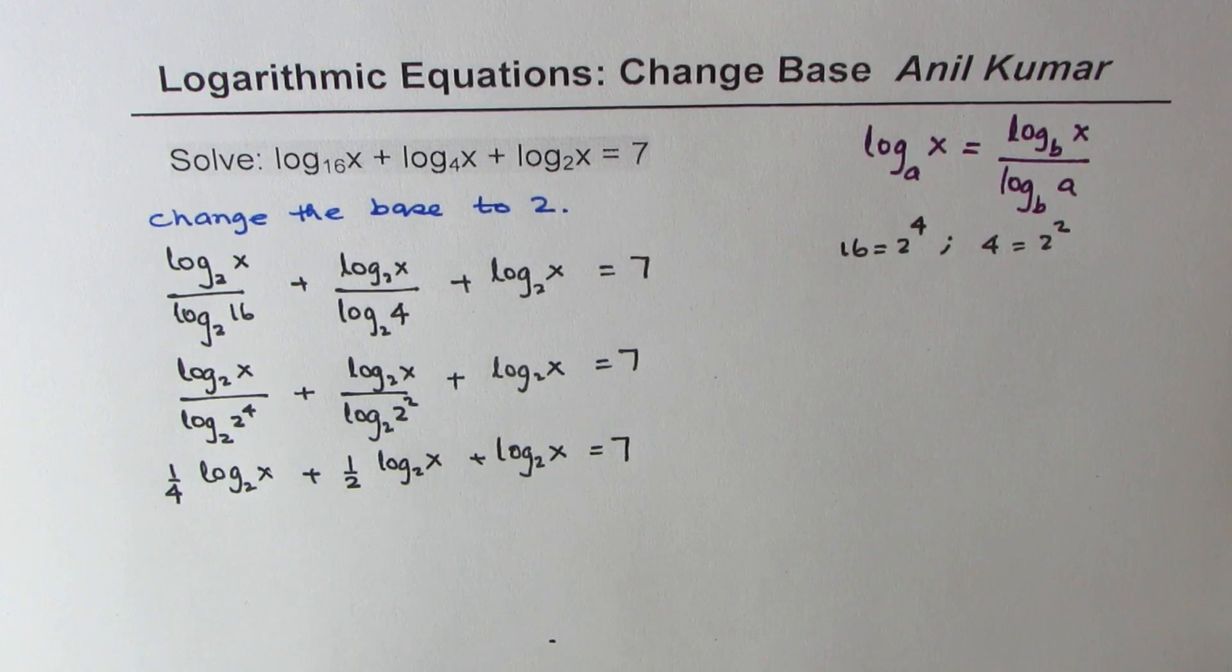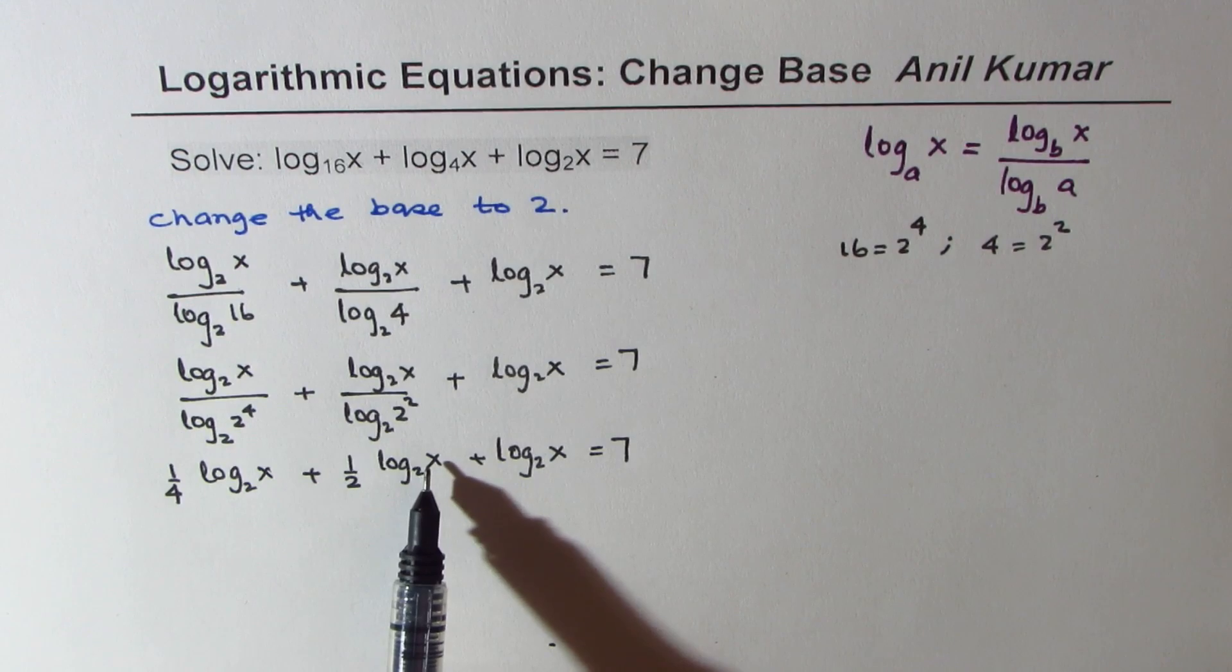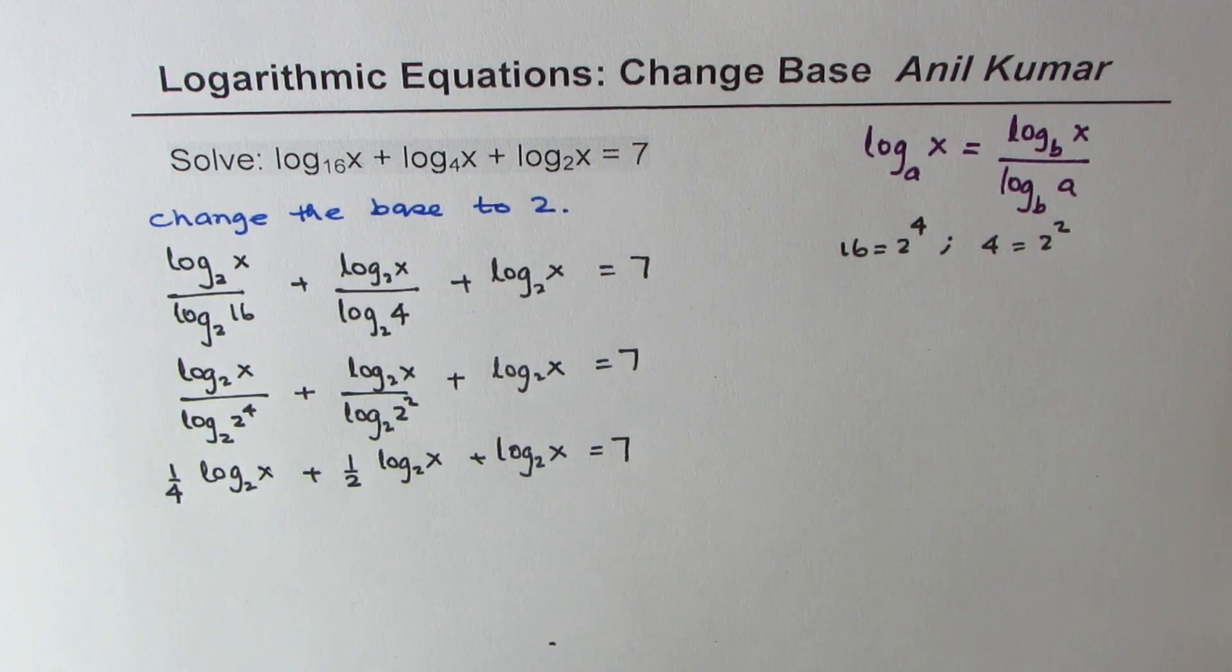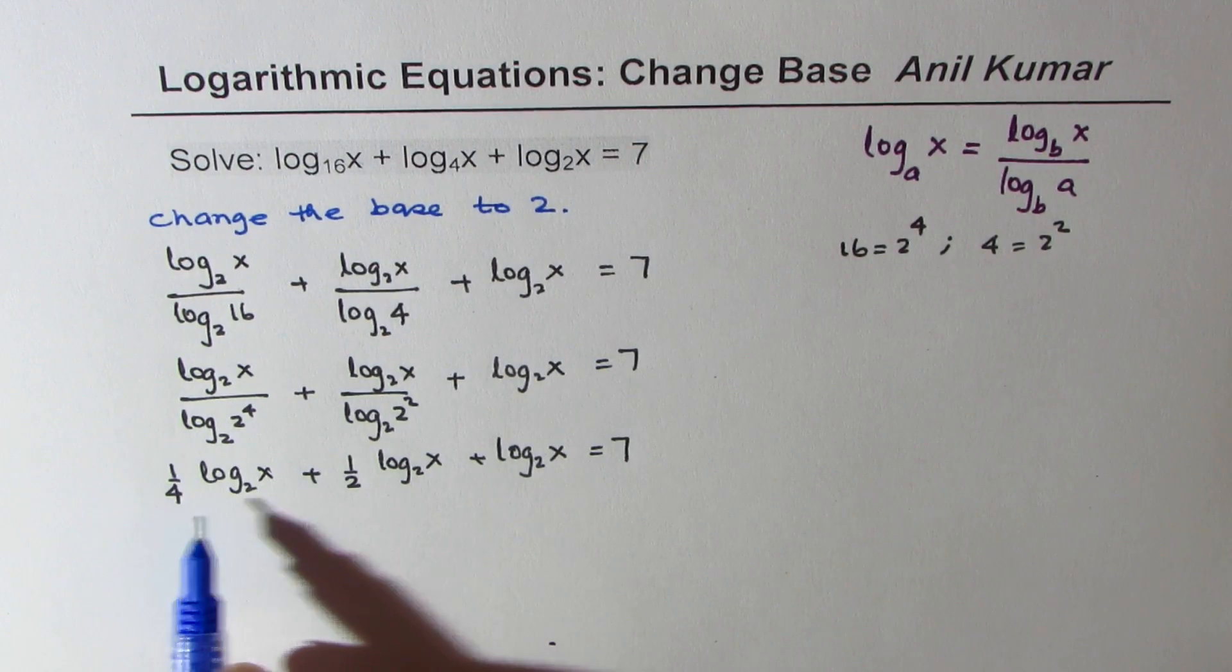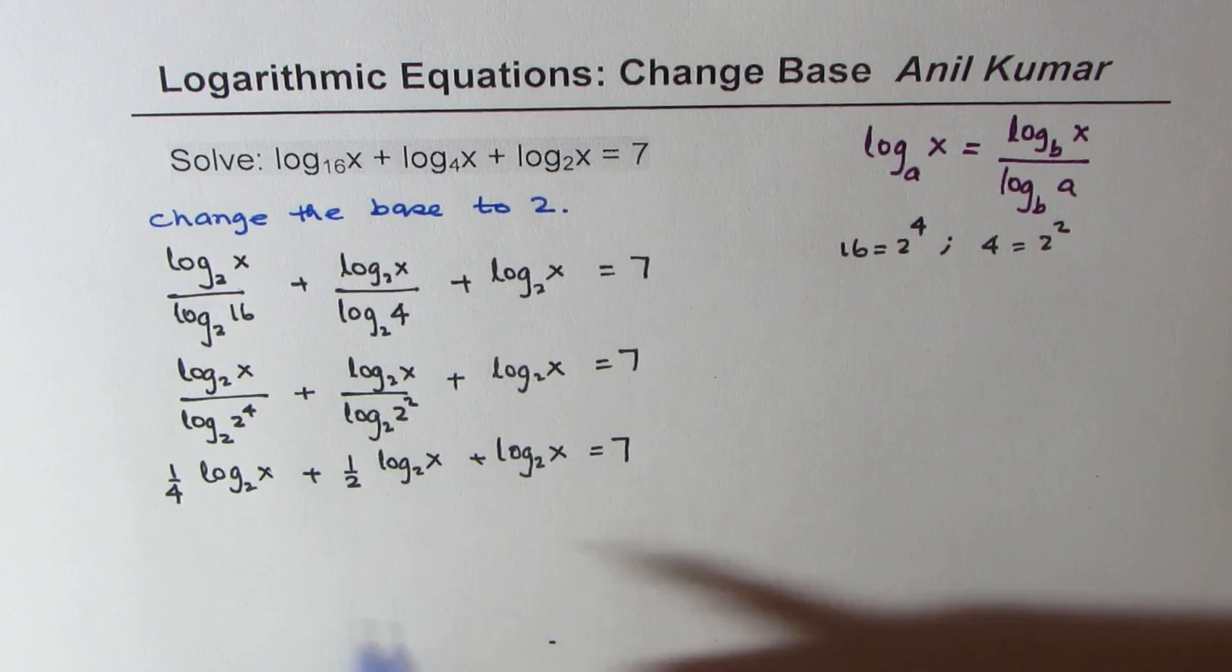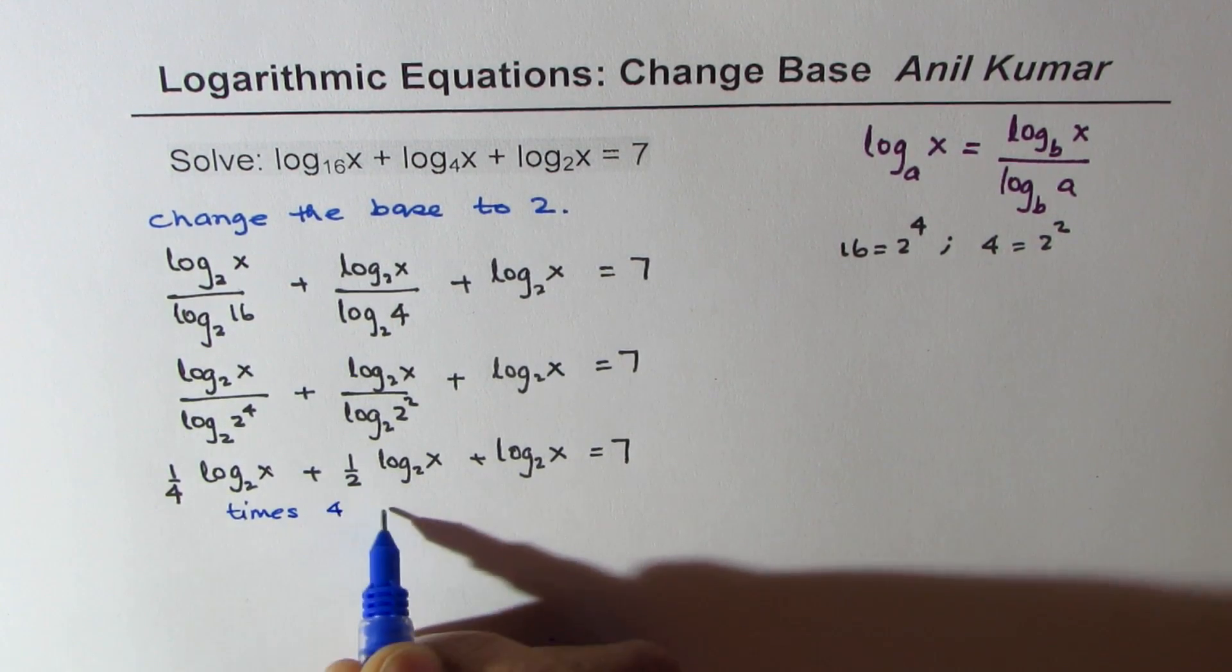At this stage, we have two options. We could even go with the fourth root, square root, and then solve the equation. Or we could just multiply everything by 4. So what we are going to do here is times 4 each side.